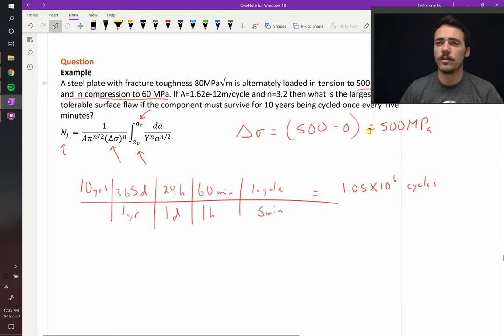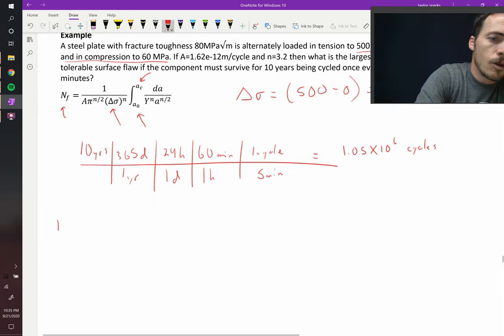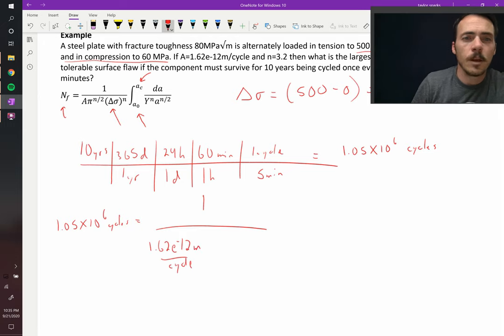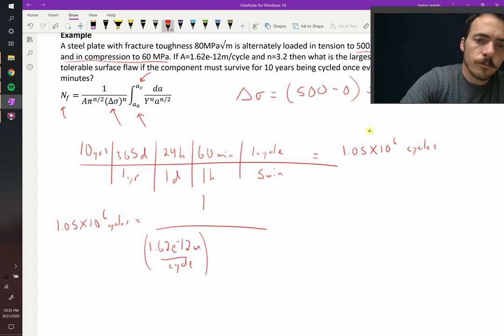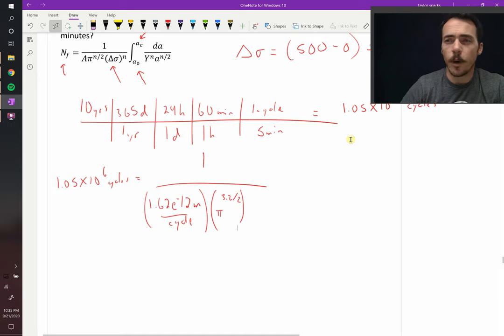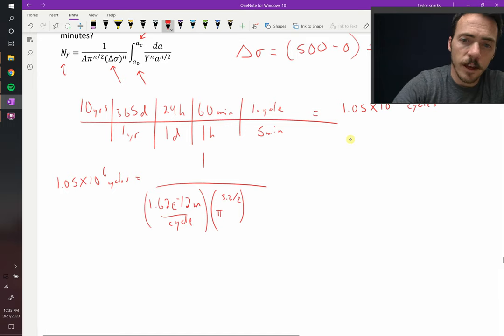So let's go ahead and plug this into our integral for the number of cycles. 1.05 times 10 to the sixth cycles must now be equal to one divided by A, which is 1.62e to the negative 12, that's meters per cycle, multiplied by pi to the n over 2, so pi to the 3.2 divided by 2, multiplied by the range in the stress, that's 500 MPa.